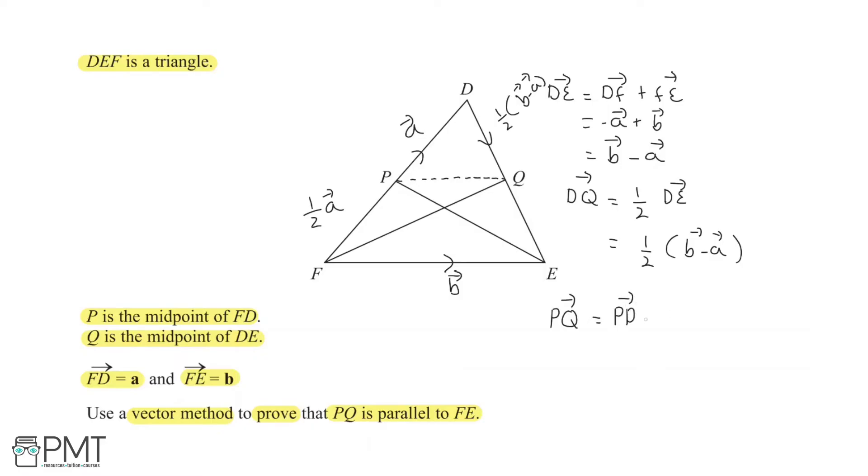Plus our vector DQ. PD is half our vector of A, and DQ is going to be plus half vector B minus vector A, like that.